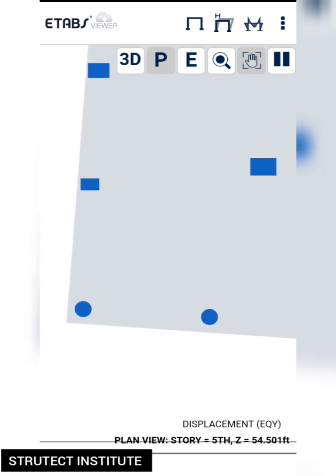Look at here, our structure is swaying but is not too high. Also look at the bottom half plan view, story is fifth floor, then our z is equal to 54.2501 feet.